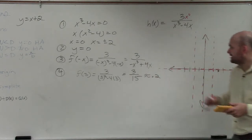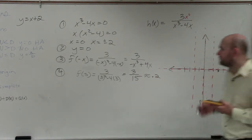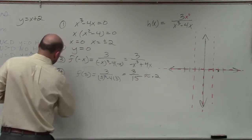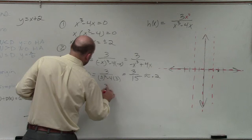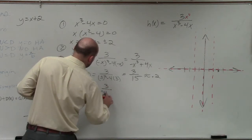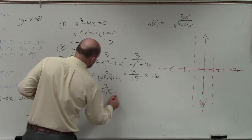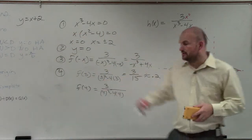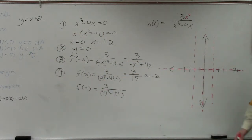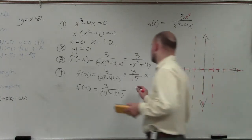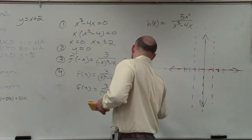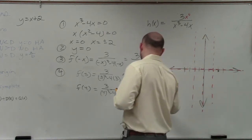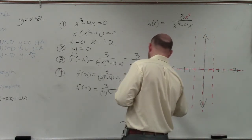Let's also do f of 4. That gives us 3 over 4 cubed minus 4 times 4, so 3 over 64 minus 16, which is 48. So 3 over 48 is one sixteenth, which my calculator shows as 0.0625.